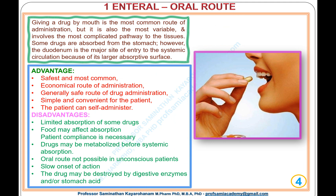Type 1, Enteral: Oral Route. Giving a drug by mouth is the most common route of administration, but it is also the most variable and involves the most complicated pathway to the tissues. Some drugs are absorbed from the stomach; however, the duodenum is the major site of entry to the systemic circulation because of its larger absorptive surface.